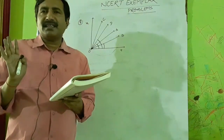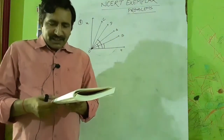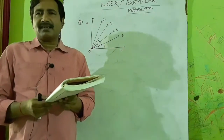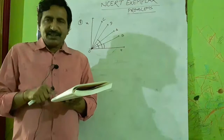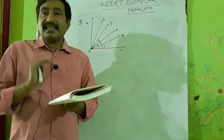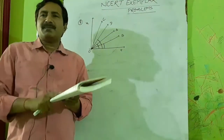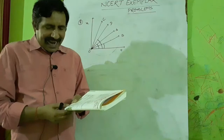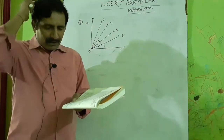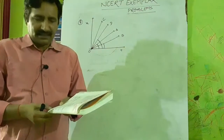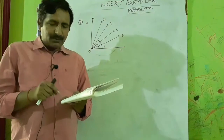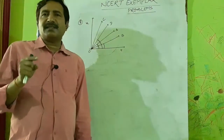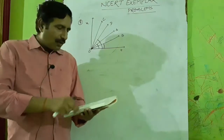Question eleven: In which of the following cases are the distance moved and magnitude of displacement equal? Generally displacement is less than or equal to distance. The options are: car moving on a straight road, car moving in a circular path, pendulum moving to and fro, or Earth revolving around the Sun. The correct answer is the first option — if a car moves along a straight road, distance and displacement can be equal.